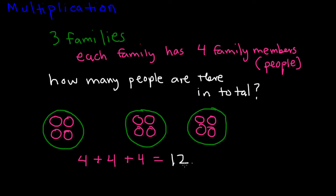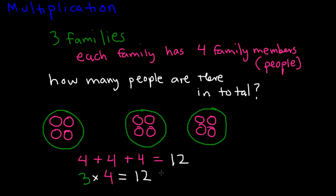Now multiplication is just another way of writing four plus four plus four. What I'm going to do is write the three families times the four people in each family. So that equals also twelve. This is another way of saying this.